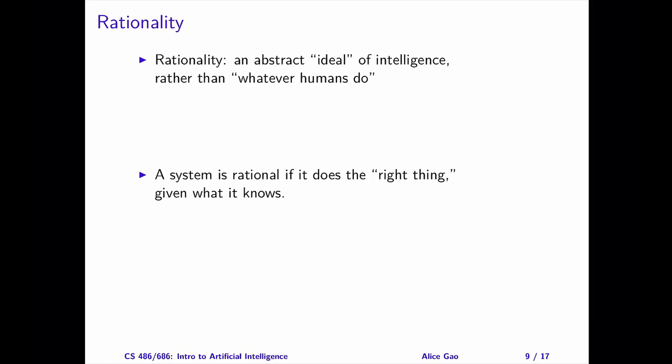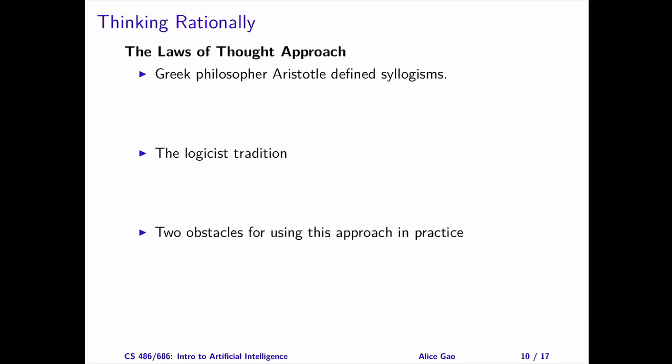The next two definitions will use rationality as the benchmark. Rationality is an ideal concept of intelligence, and we'll define it mathematically. Roughly speaking, a system is rational if it does the right thing given what it knows. For the third definition, laws of thought, our goal is to build a system that thinks rationally.